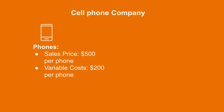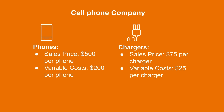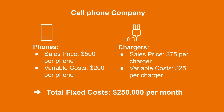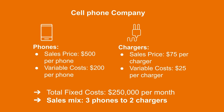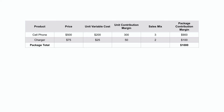Let's apply the cost-volume-profit analysis to a company that sells multiple products. Many companies produce and sell more than one product, and we need to know how many units of each product they need to sell in order to break even. The cell phone company from earlier also sells cell phone chargers. The cell phones sell for $500 each with variable costs of $200, and the chargers sell for $75 each with variable costs of $25. The total fixed costs are $250,000 per month, and the company plans to sell three phones for every two chargers — this is their expected sales mix. The first step is to form a package of cell phones and chargers based on their sales mix and calculate the contribution margin for the package as a whole.